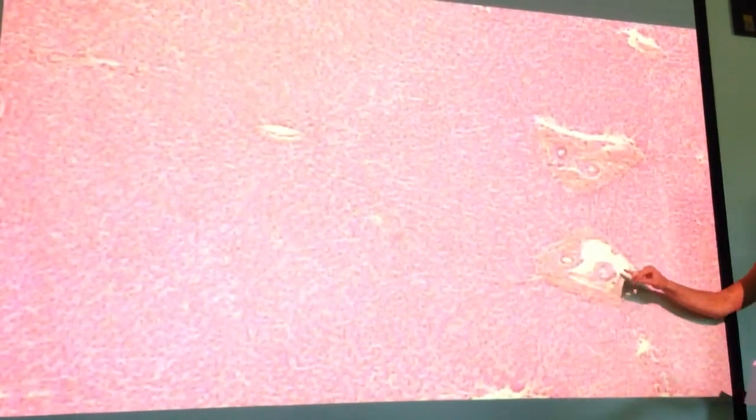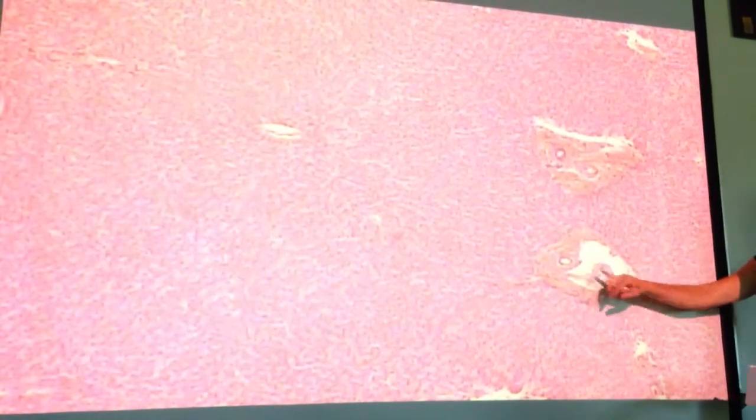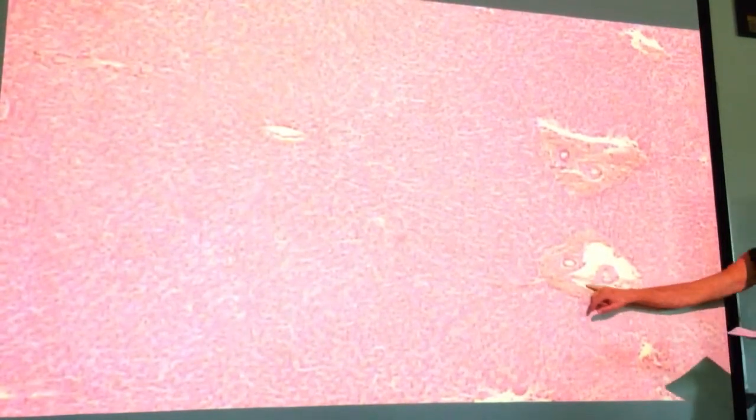Over here, you can see this round structure that's about the same size as the bile duct. That's going to be the hepatic artery. Now, you kind of just have to look for the rough tissue, because these veins are typically hard to find. But this would be a portal vein over here in the corner.